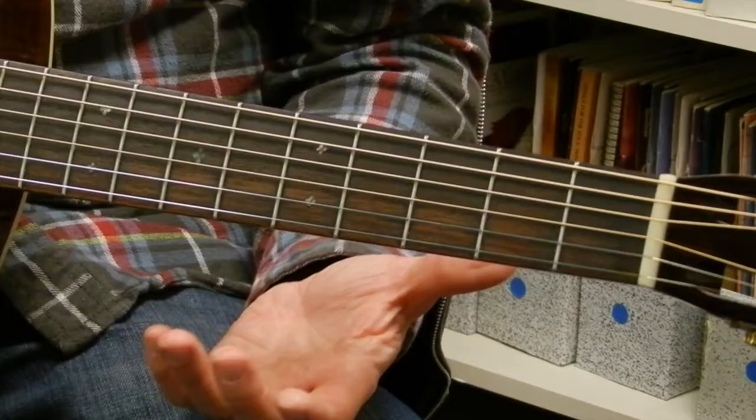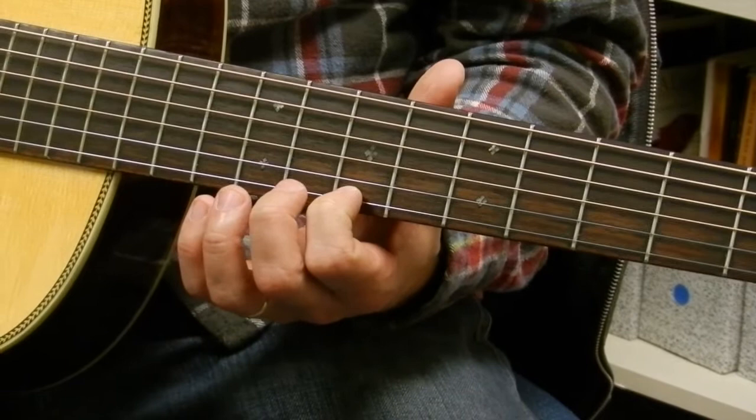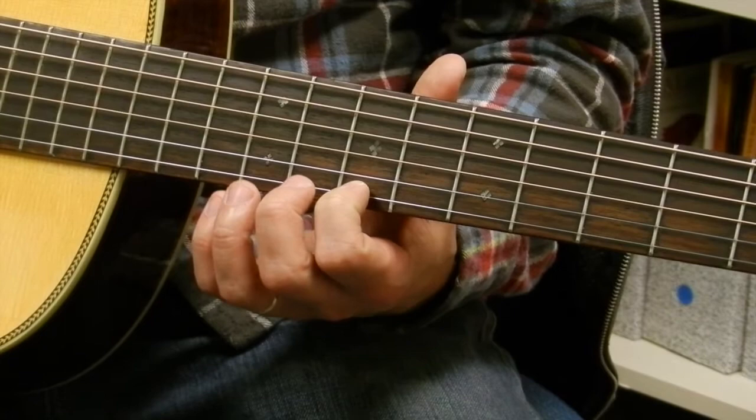So I could go to the fretboard and I could think, this is my E string, and I've got F, F sharp, G, G sharp, A, A sharp, B. Okay, B, that's one of the notes in a G chord, because G, B, and D make it up. So B, we'll remember that.